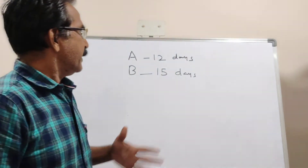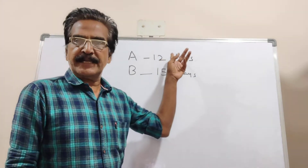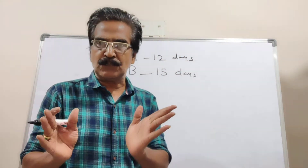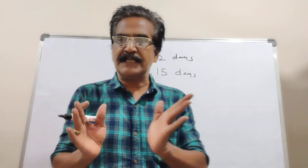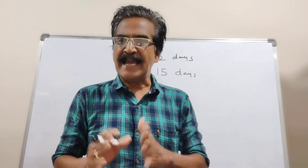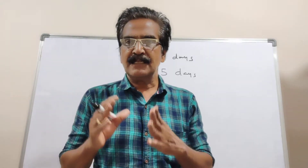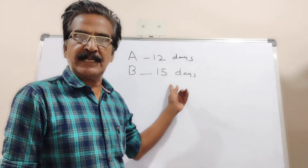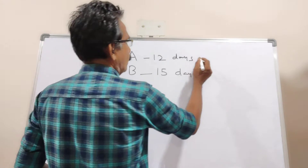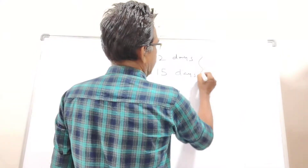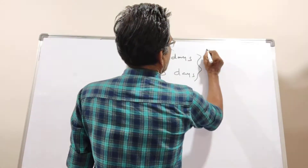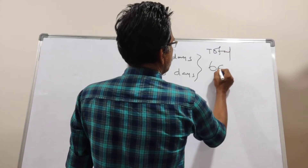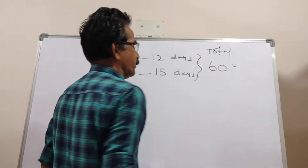A takes 12 days, B takes 15 days. Let us assume the total quantity of work as 60 units. The 60 is the LCM of 12 and 15. So, total work is 60 units.